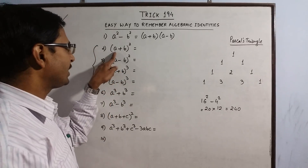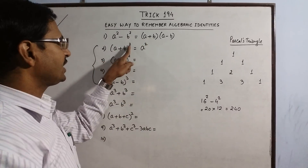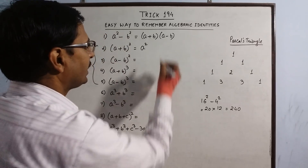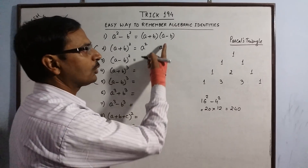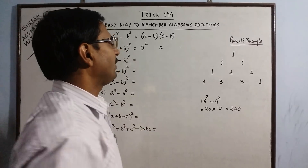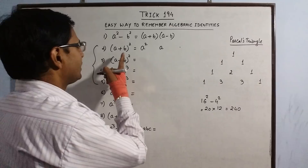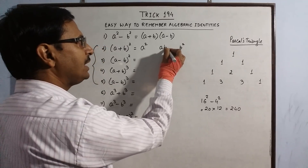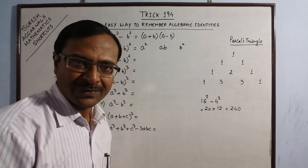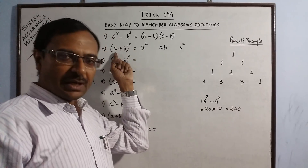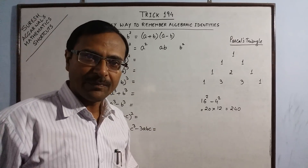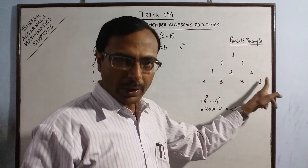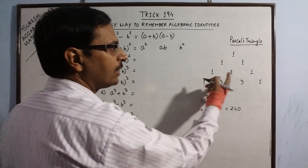For A plus B whole square, the first term is A, so we start with the highest power of A, which is A square. In the next term we have A to the power 1, and in the last term A will not exist. For B, we start from B square, reduce the power by 1 to get B, and then B will not exist. So we have decreasing powers of A and increasing powers of B. There are 3 terms, so from Pascal's triangle the coefficients are 1, 2, 1.